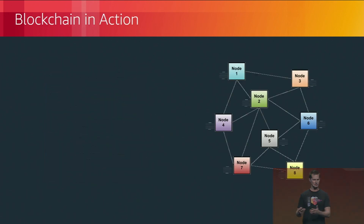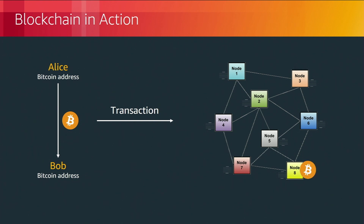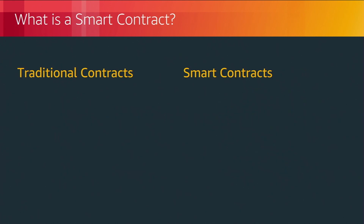Let's see how this works in action using Bitcoin as an example. Alice and Bob both create a public Bitcoin address by generating a random private key with a corresponding public key. Alice sends a transaction to Bob's public address; that transaction goes out to the network. All the miners compete to find the nonce value and get the required hash, and the first node to find that answer is rewarded with a block reward in Bitcoin plus transaction fees.